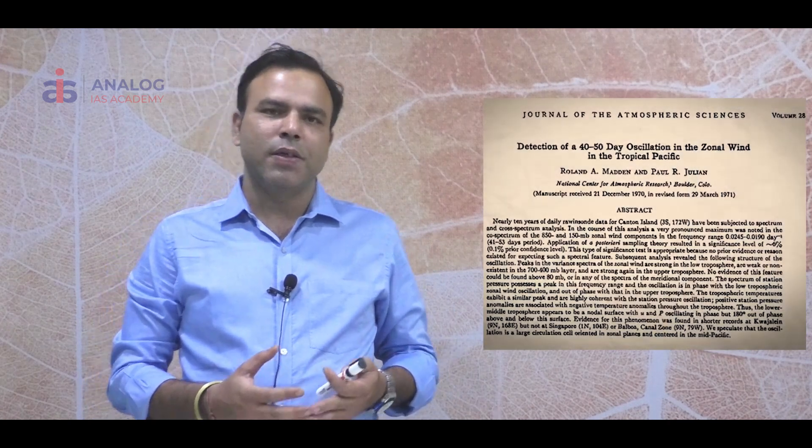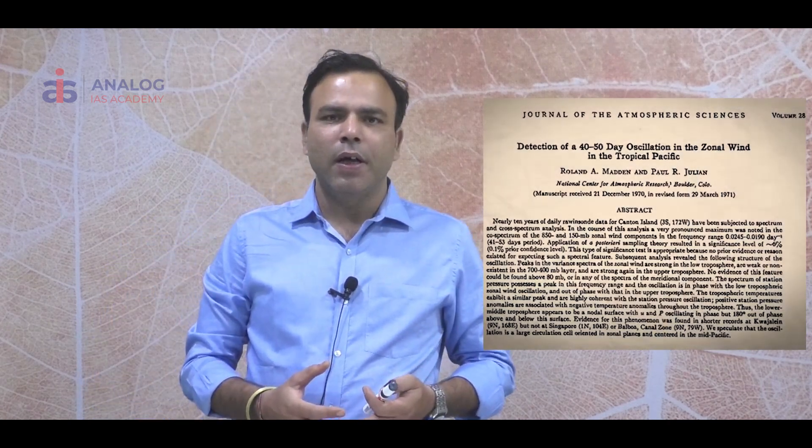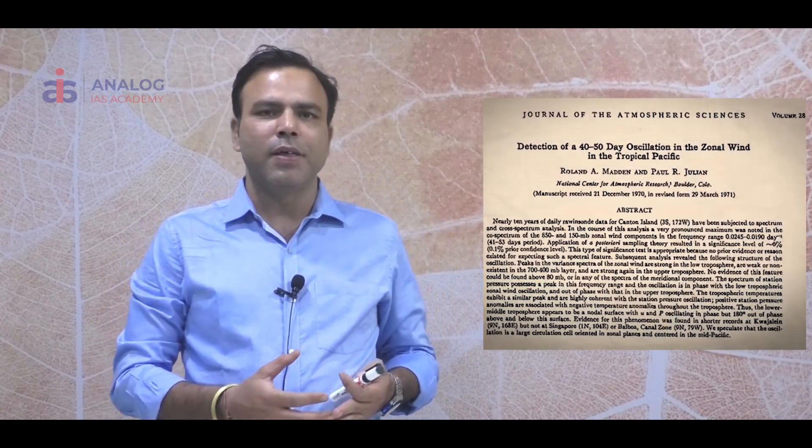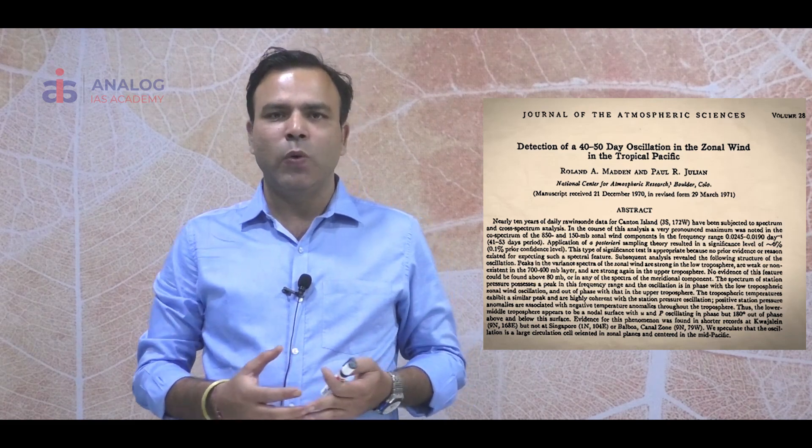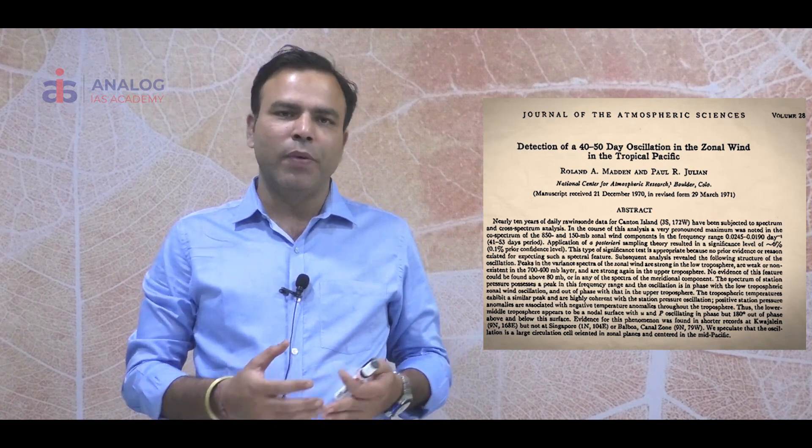In the 1970s, American Atmospheric Sciences discovered a concept in 1972 called the MJO effect, or Median Julian Oscillation. Here, the warm waters in the equatorial regions move from the African coast, crossing the Indian Ocean, moving towards the Pacific Ocean till the American coast of the Pacific.